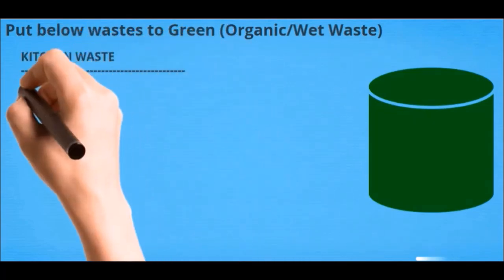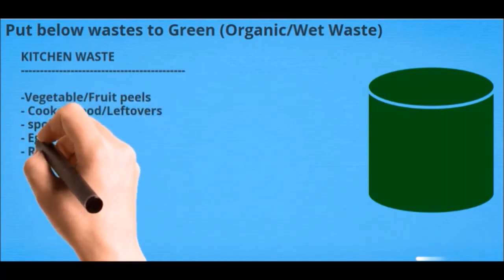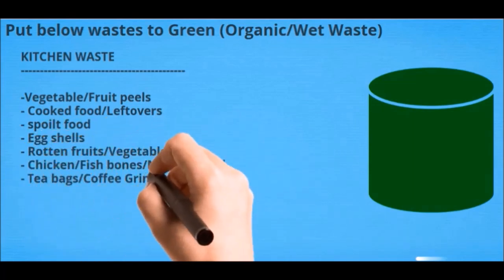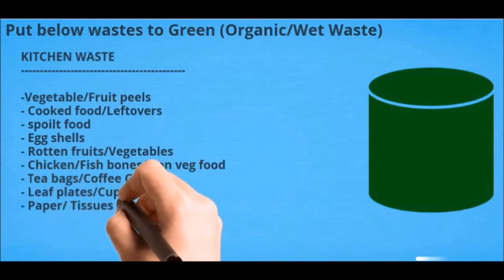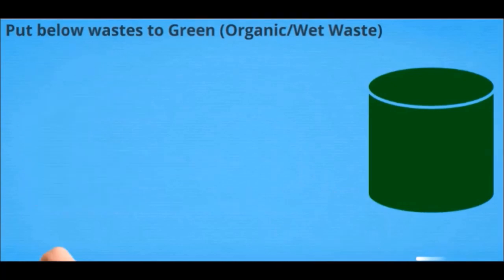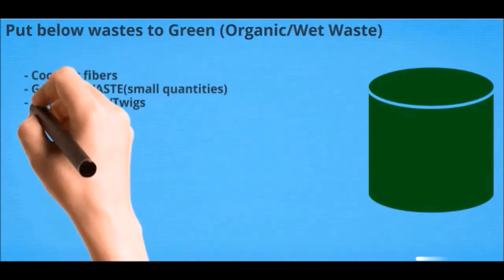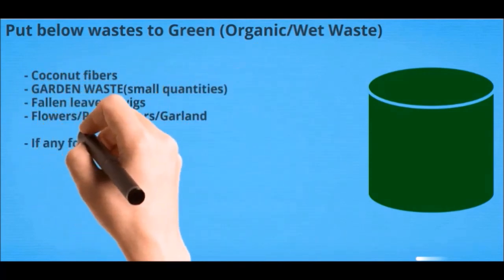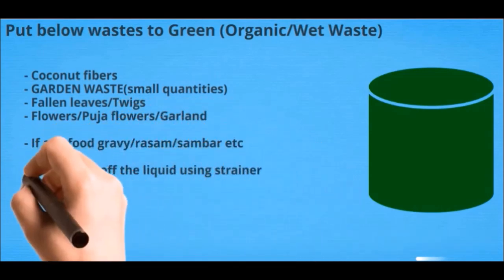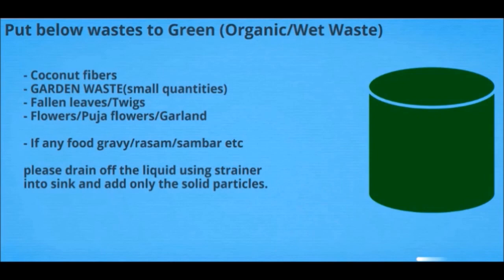Kitchen waste: vegetable and fruit peels, cooked food leftovers, spoiled food, eggshells, rotten fruits and vegetables, chicken and fish bones, non-veg food, tea bags, coffee grinds, leaf plates, cups, paper tissues soiled with food in small quantities, coconut fibers, garden waste in small quantities, fallen leaves, twigs, flowers, puja flowers, and garlands. If any food gravy such as rasam or sambar, please strain off the liquid using a strainer into the sink and add only the solid particles.